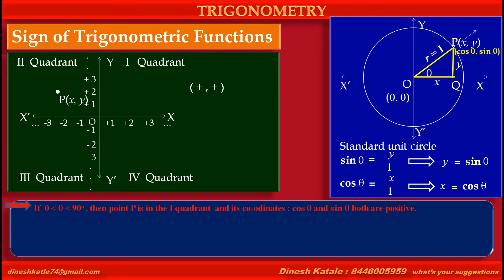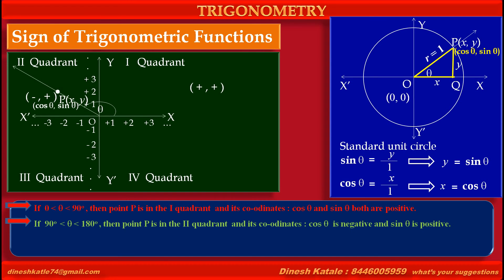Now, let P(x, y) be any point in the second quadrant. Ray OP forms an angle theta with the positive direction of the x-axis, where theta is greater than 90 and less than 180. Assuming OP equals 1, the polar coordinates of point P are (cos theta, sin theta). Every point in the second quadrant has a negative x-coordinate and a positive y-coordinate. Therefore, cos theta is negative and sin theta is positive in the second quadrant. Thus, if theta is between 90 and 180, then point P is in the second quadrant, cos theta is negative and sin theta is positive.